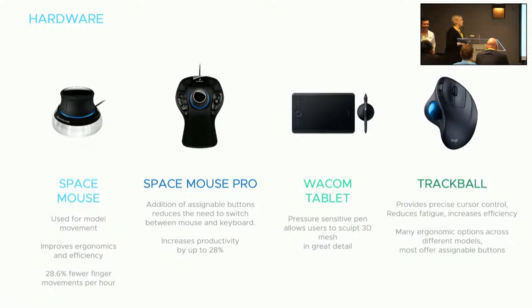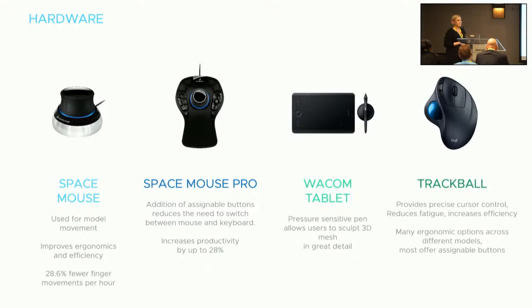After software, you need hardware—these are optional but helpful if you have someone doing 3D work on the computer all day. First is the space mouse, which lets you rotate the model as if you're holding it, zoom in and out—all customizable, much less wrist strain than a regular mouse. You can upgrade to the space mouse pro, which adds assignable buttons—very beneficial to have tools at your fingertips rather than switching between keyboard and mouse. It makes things about 28% more efficient. The Wacom tablet is like pencil and paper for digital—cursor follows where the pen draws, all pressure sensitive. The trackball mouse is more for ergonomics and also has assignable buttons for both hands.